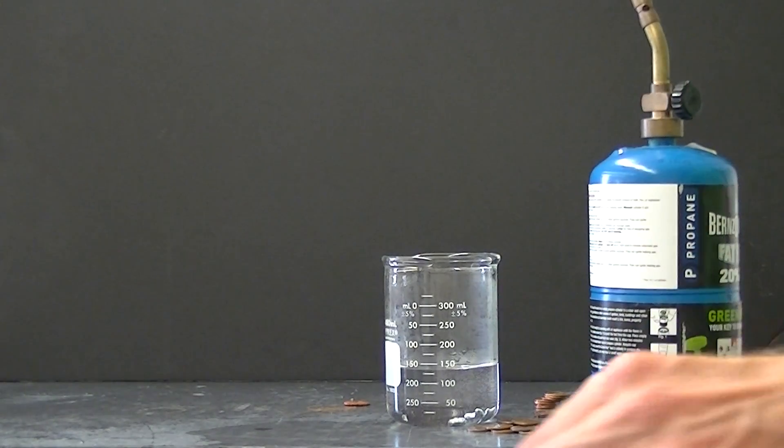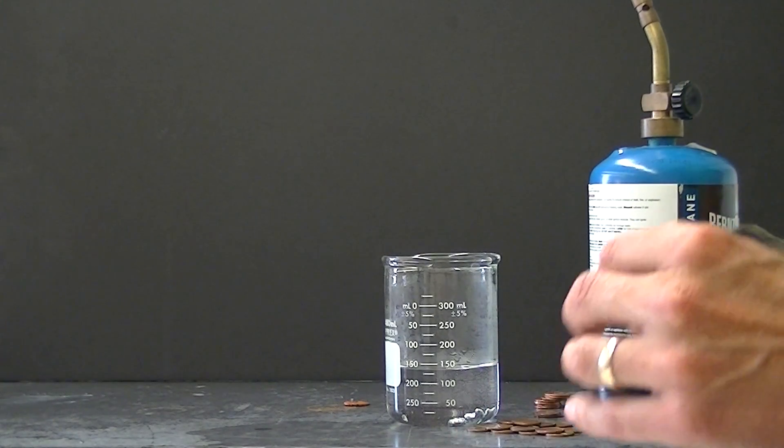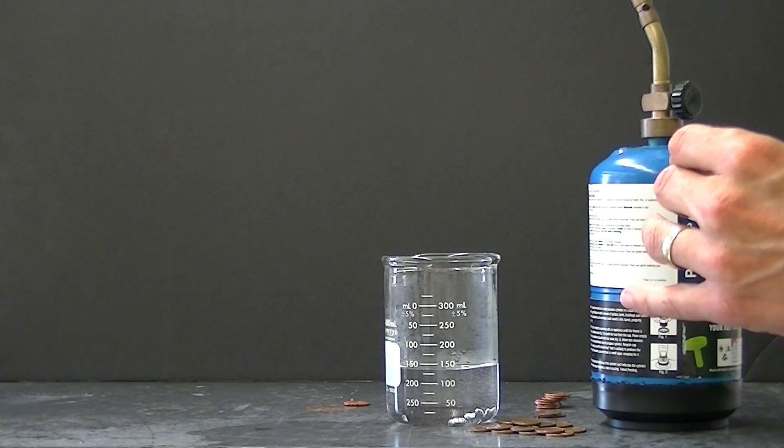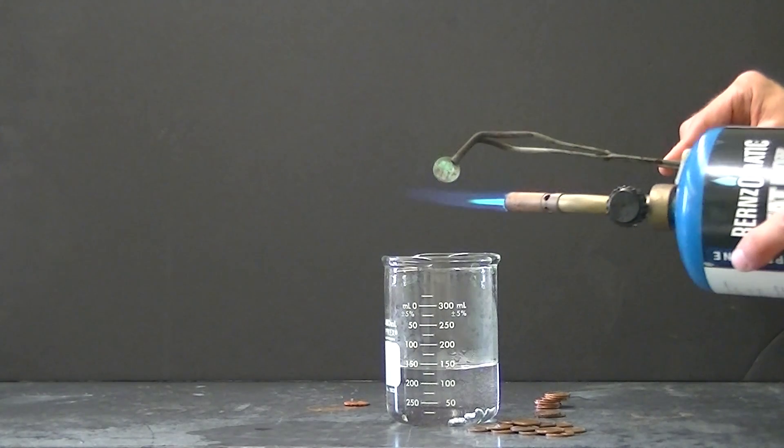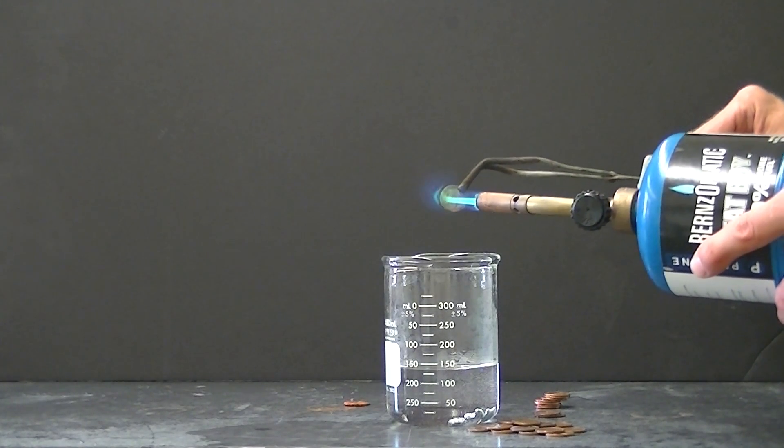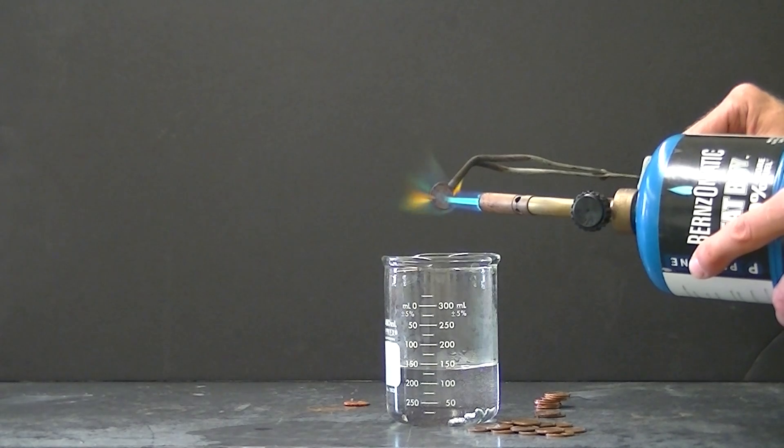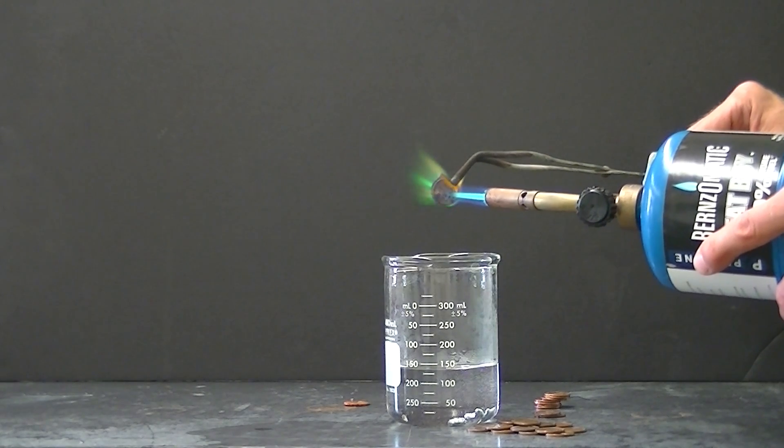I'm going to do this again with a penny that has a bit of green corrosion on it. This one here. And usually when I heat pennies with a bit of green corrosion on them you'll see that characteristic green flame that's indicative of copper atoms being excited.